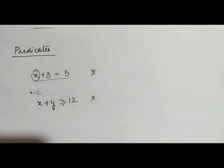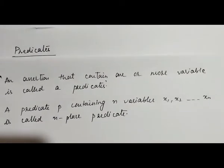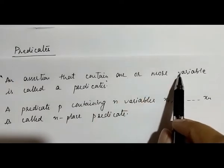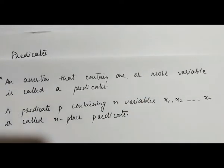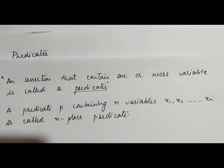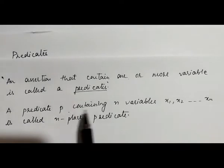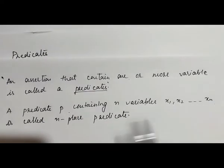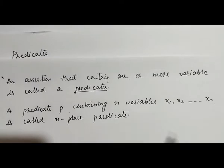An assertion that contains one or more variables to the proposition or to any statement, it is called predicate. And a predicate p containing n variables x1, x2 up to xn is called n place predicate.